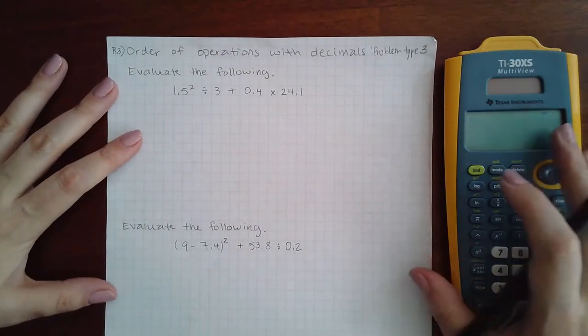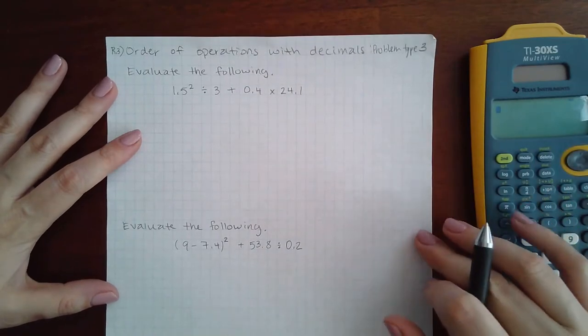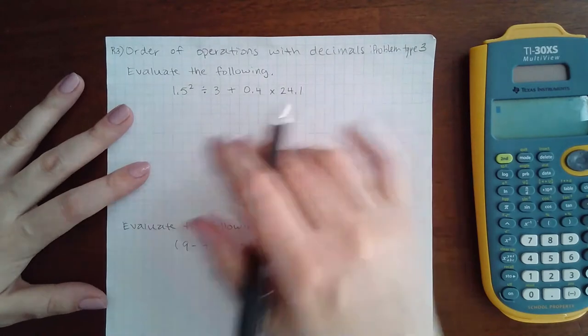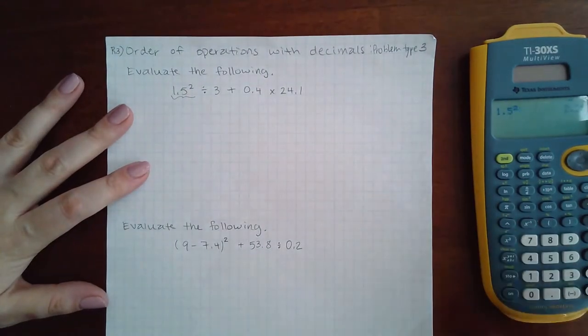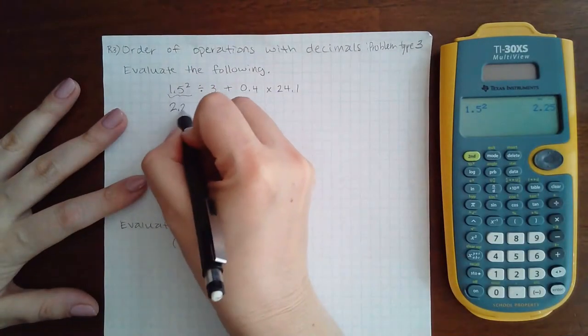Okay, here we are with R.3 order of operations with decimals, problem type 3. There's no parentheses or grouping symbols. I do have something that I need to evaluate. I get 2.25.